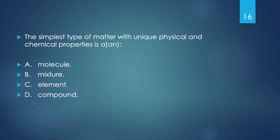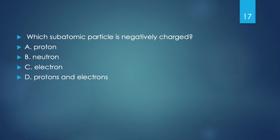Pop quiz: The simplest type of matter with unique physical and chemical properties is — A) molecule, B) mixture, C) element, or D) compound? Since it is the simplest type of matter, it can't be a mixture, and a molecule or compound is made up of multiple elements. The answer is C, element. Next: which subatomic particle is negatively charged? Protons with a P are positively charged, neutrons are neutral — so by default, the answer is C, electron. The electron is the subatomic particle that is negatively charged.